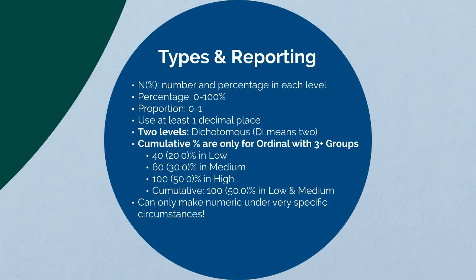If there are only two levels to your variable, then it is considered dichotomous — 'di' meaning two — a yes or no variable. Cumulative percents are only for ordinal variables with three or more groups. For example, with responses of low, medium, high, you could report a cumulative percentage for those that are low and medium. You wouldn't combine a low and a high group. Cumulative percents show everything that is this level or lower, or this level and higher. You can only make numeric variables out of categorical variables under very specific circumstances, because with numeric variables you can calculate a mean, which you cannot do with categorical variables.